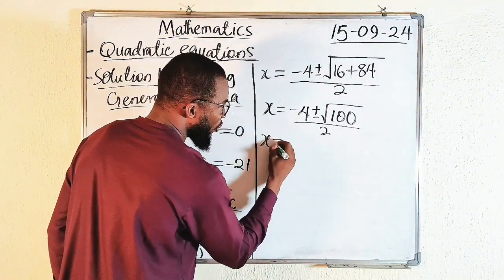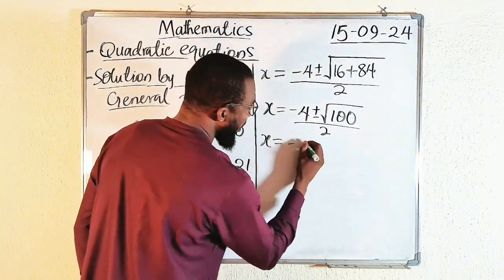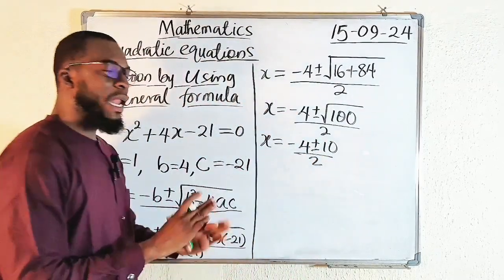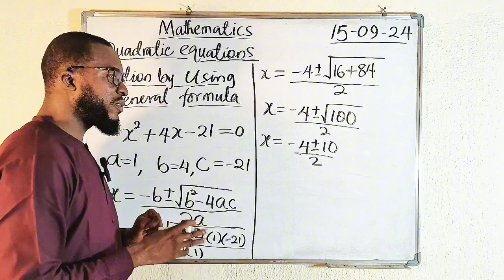Square root of 100 is 10. So this is minus 4 plus or minus 10 divided by 2. Now we have two values of x. Let us split them.